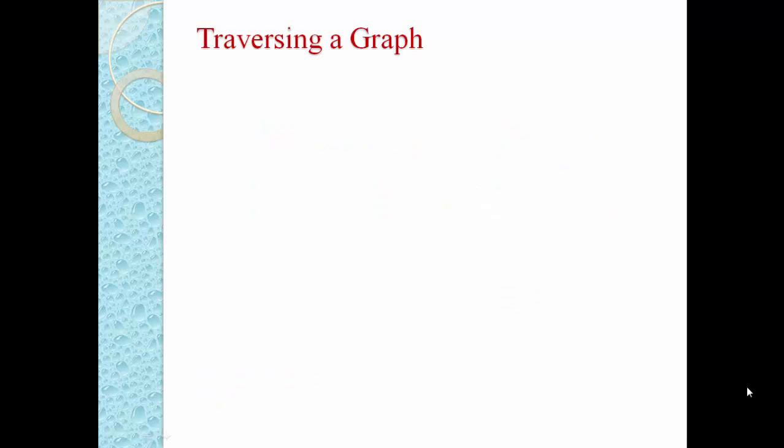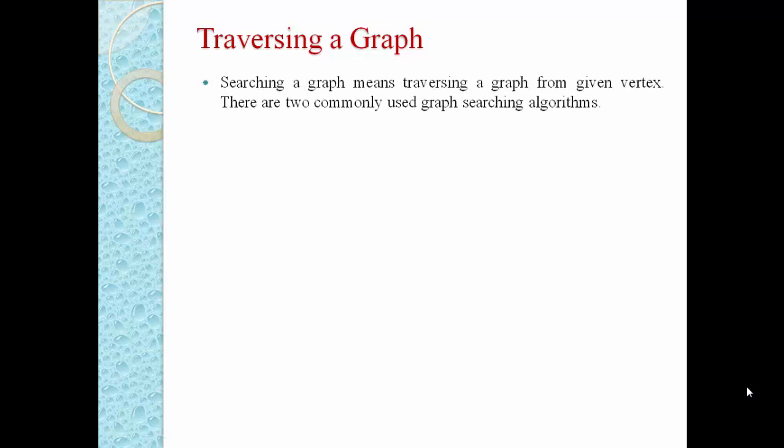Traversing a graph is a technique to visit the different nodes of the graph. It is basically used to search something from the graph. In a graph there are a number of nodes, a number of edges, and there may be a number of cycles. So there must be some method to visit different nodes of the graph to search a particular node.